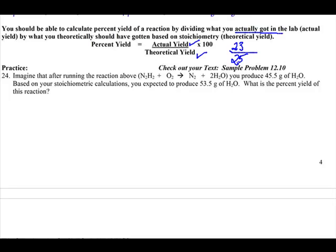So we take 23 divided by 25, what you actually got, divided by what you should have gotten. Multiply it by 100, and that gives you a percentage of 92%. You got 92% of what you should have gotten right.